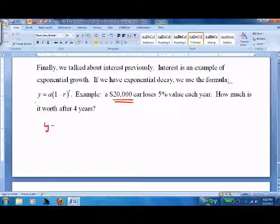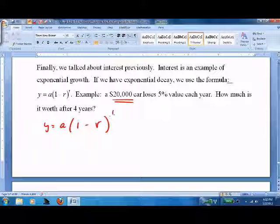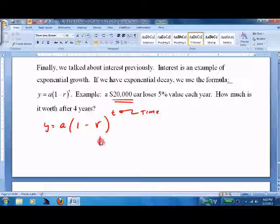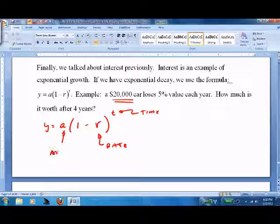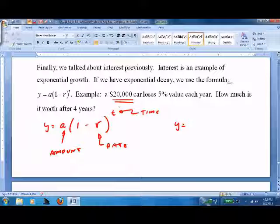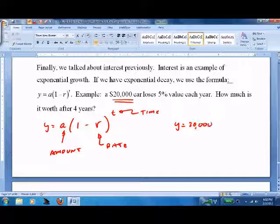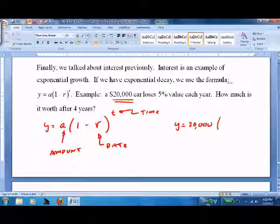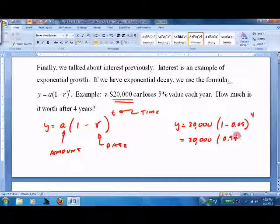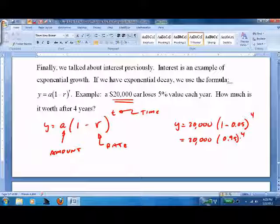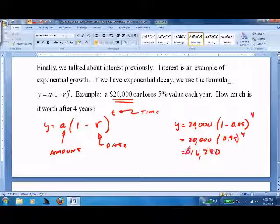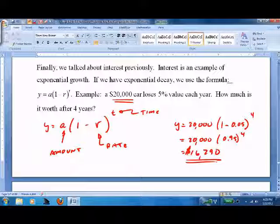Here's our formula: y equals a times one minus r to the t. Same as last time except there's a minus where there used to be a plus. t is your time, r is your rate, a is the amount. Simply plug it in. Example: a $20,000 car loses 5% value each year. How much is it worth after four years? y equals 20,000 times one minus 0.05 to the fourth. Put it in your calculator, you get $16,290. The car loses a fair amount of value.